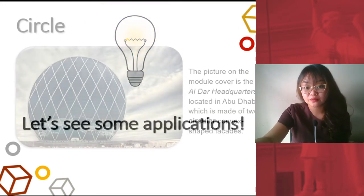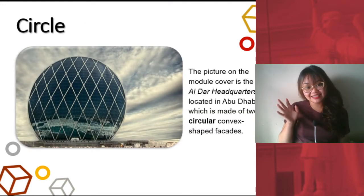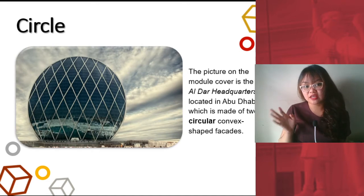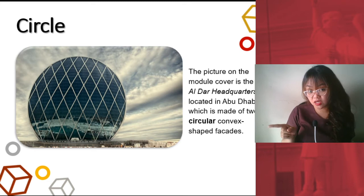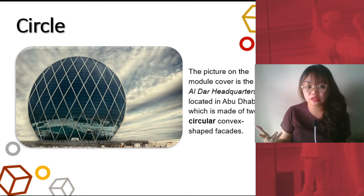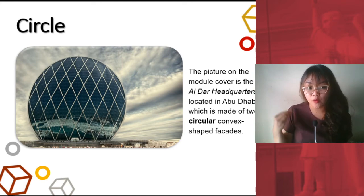So, let's see some applications. This image here is the Aldar Headquarters. This is located in Abu Dhabi, which is made of two circular convex-shaped facades. That's pronounced as facade. So, it's an application of a circle. One of the applications that is a well-known structure.